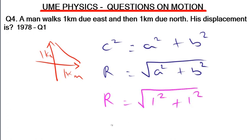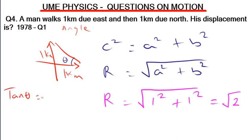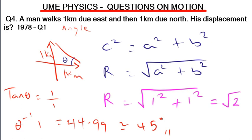The displacement is √2 km. We can also calculate the angle of movement using tan θ = opposite/adjacent = 1/1. Therefore tan⁻¹(1) gives us 44.99°, which is approximately 45 degrees. That is the direction of the resultant displacement.